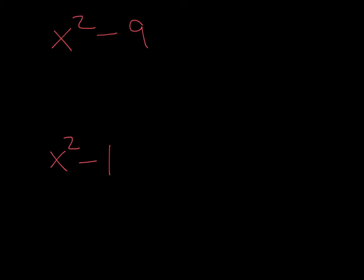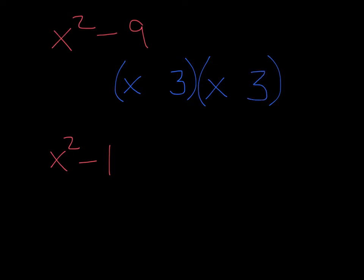For the first example, you look at the first term and say yes, I can take the square root of x squared — which is x. And yes, I can take the square root of 9 — which is 3. So you set up two sets of parentheses. Write x in both of them and 3 in both of them. One gets a plus, one gets a minus. It's factored. You can always check by distributing and combining like terms to get x squared minus 9.